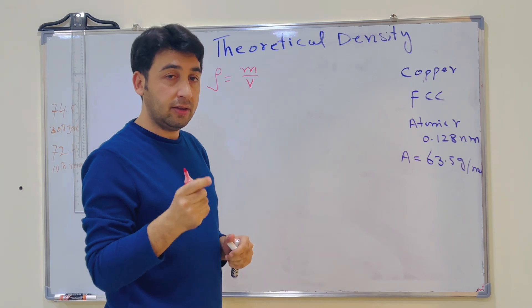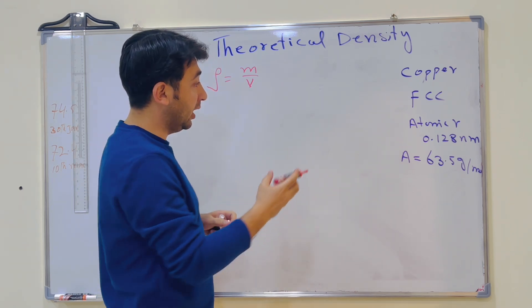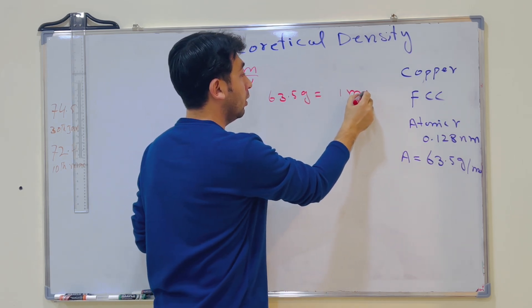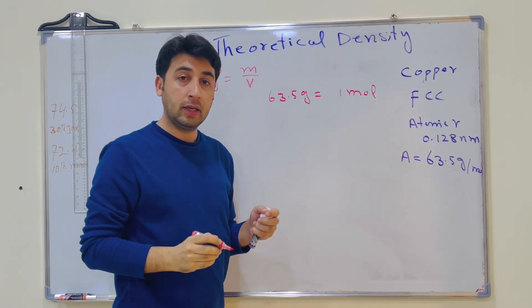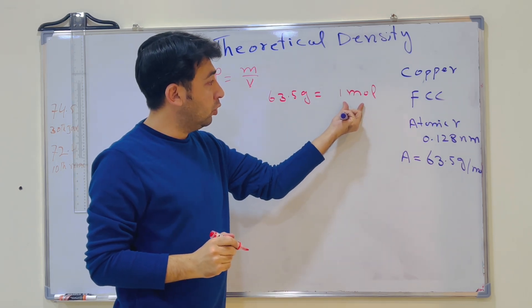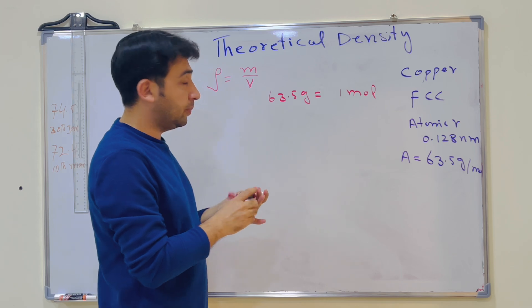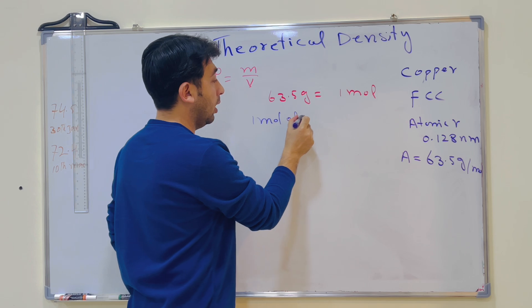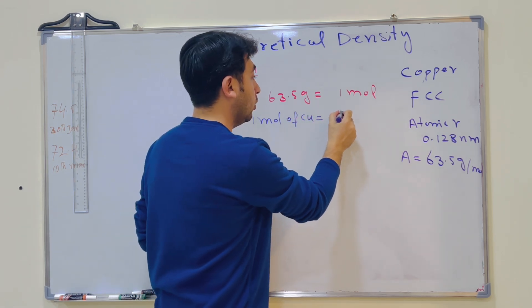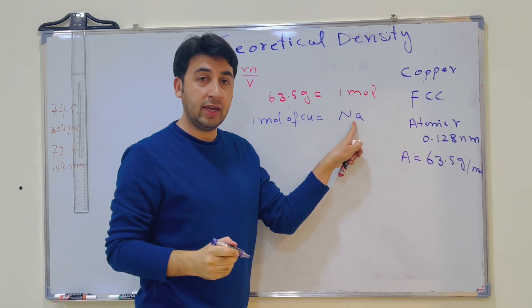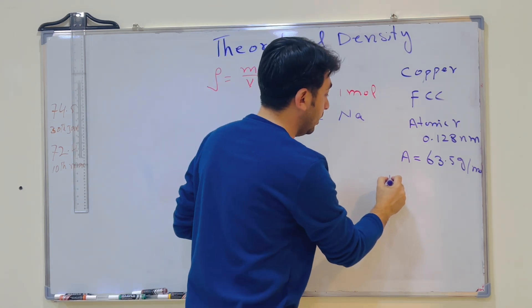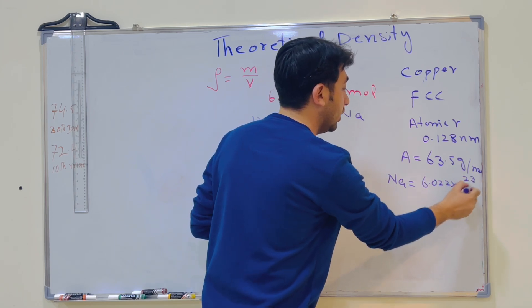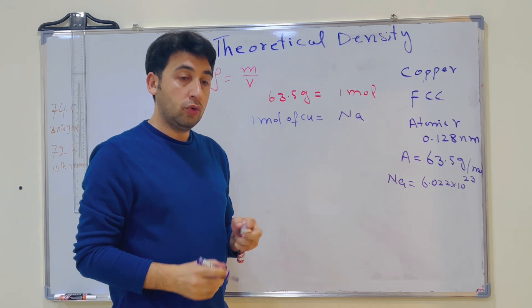How can we find the mass of one atom? We know that 63.5 grams equals one mole of copper. In one mole of copper — or any element — how many atoms are there? We call it Avogadro's number, represented as Nₐ, and Nₐ is equal to 6.022 × 10²³ atoms.